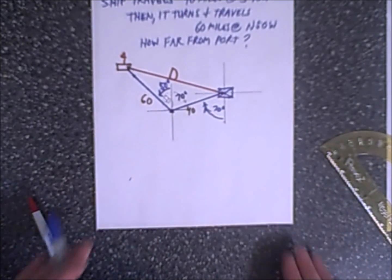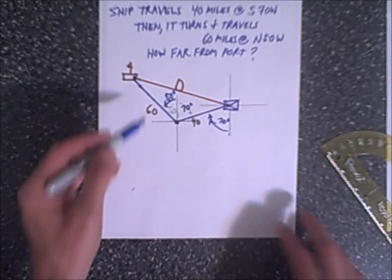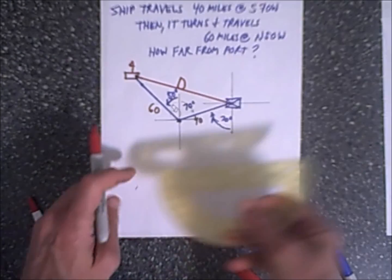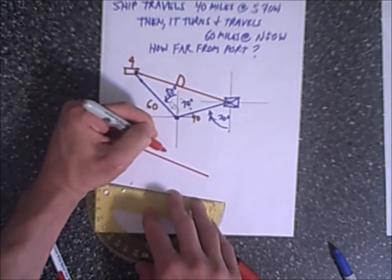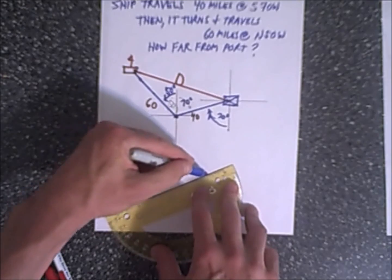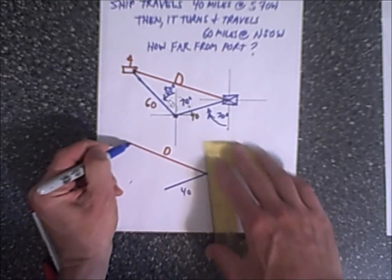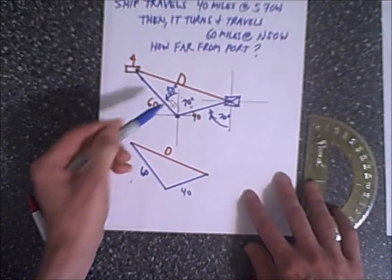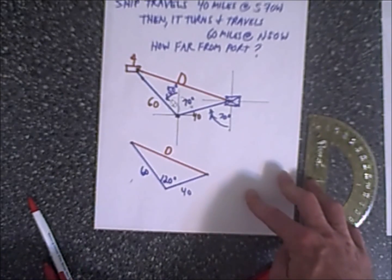So we have 70 degrees plus 50 degrees, so now we have this triangle. I'll redraw it. We have this triangle which is D, and this side is going to be 40, and this side is going to be 60, and we just determined that this inside is going to be 120 degrees.